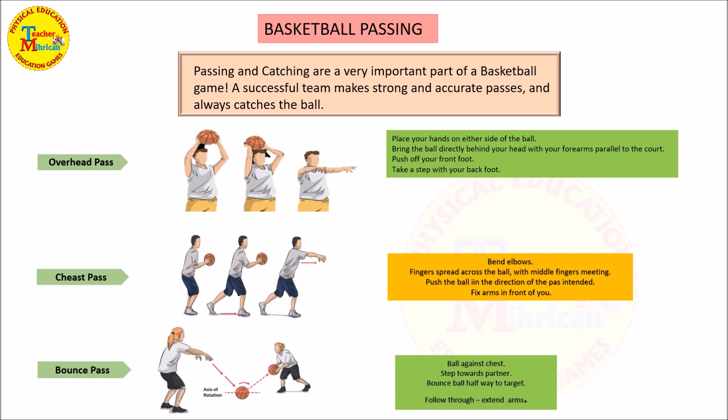Bounce pass: hold the ball against your chest, step towards your partner, bounce the ball halfway to the target, and follow through with extended arms.